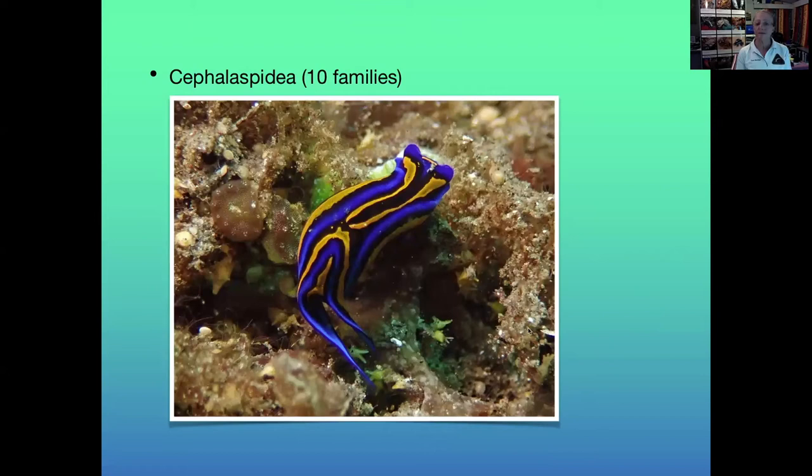The Cephalaspidea are head shield slugs, considered primitive because of their fairly simple anatomy. They have a head shield that allows them to plow through substrate while protecting their mantle. Most in this order are carnivorous, eating foraminiferans and polychaete worms. We've actually seen one species in this order cruising around on a leathery soft coral, picking off acoel flatworms as it went.